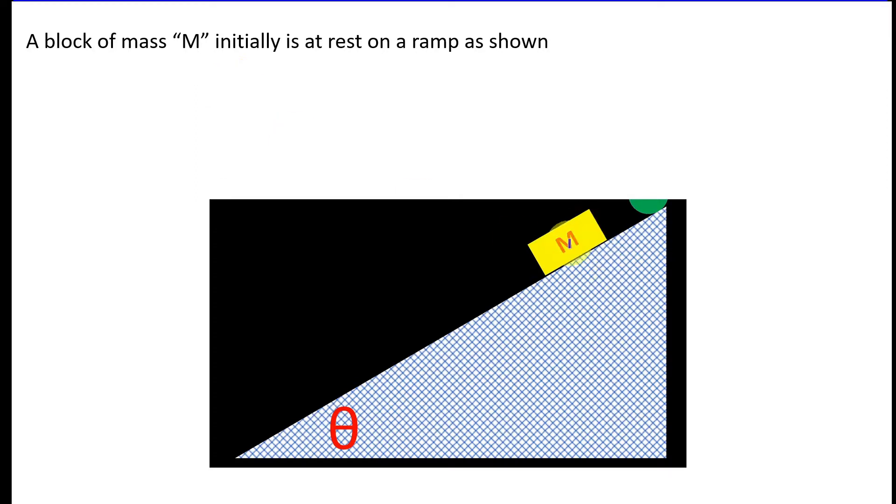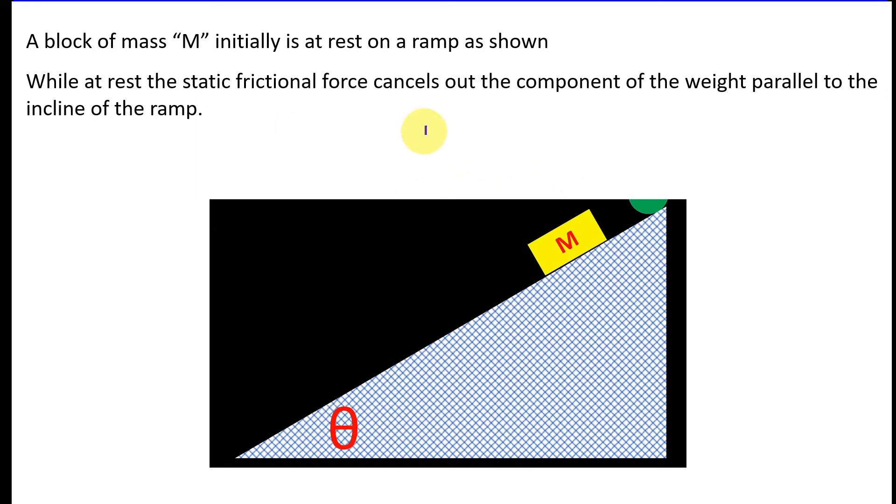So the initial condition is a mass is resting on this ramp, and while it's doing that, static frictional force cancels out the component of the weight that's going down this incline. And as you may know, the static coefficient of friction is greater than the kinetic coefficient of friction. So if this angle theta was increased enough for this mass to break free, it would never reach a terminal velocity. It would just continue to accelerate.